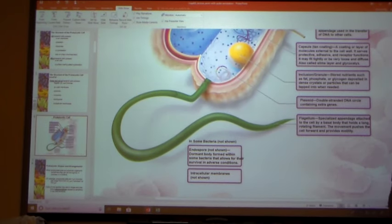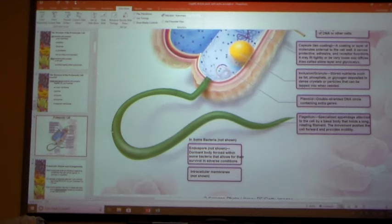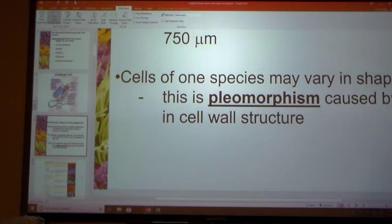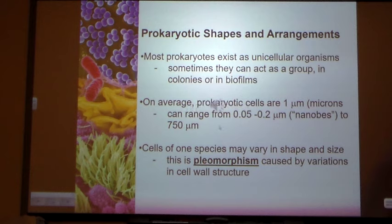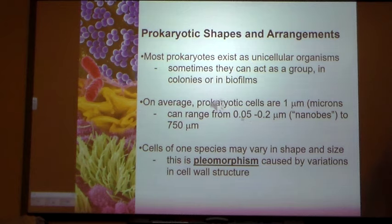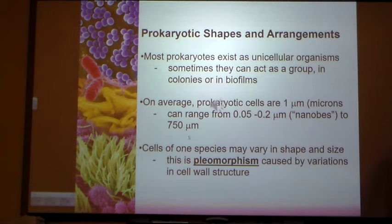We will also talk about some endospores — some bacteria will form spores. Bacteria are very diverse in size. Most bacteria range from one to two micrometers. The smallest can be under 0.05 micrometers — these are called nanops. The biggest one found is about 750 micrometers, which is visible almost with the naked eye. Bacteria vary greatly in shapes and sizes.